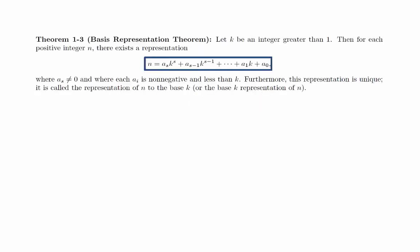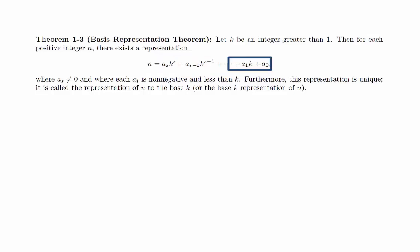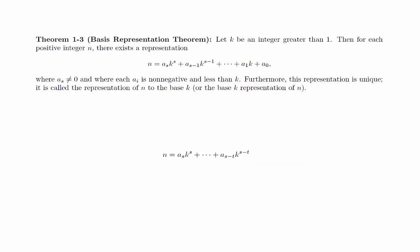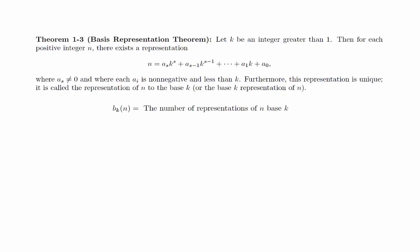The theorem we are going to prove shows that every integer has exactly one representation in any given base. We can always insist that the leading term is non-zero by just starting in a different place. However, it's possible that the trailing terms are zero. In order to help the notation in our proof, we will assume that we've dropped the terms that are zero at the end of the representation, so that the representation we use starts and ends with non-zero terms. Let b sub k of n denote the number of representations of n in base k. If we prove that this value is 1 for all n, then we would have proven the full theorem.